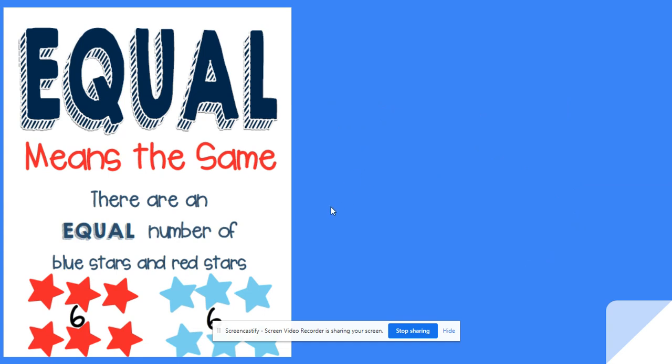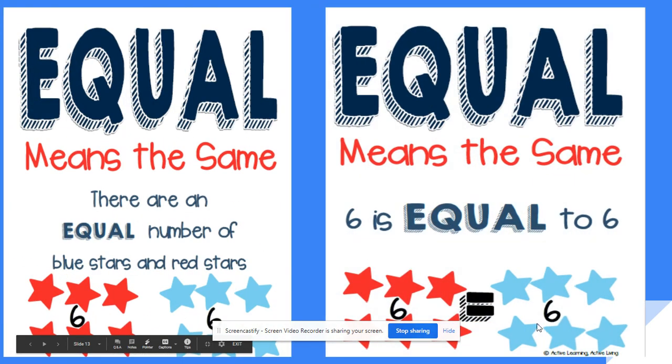The last word is equal. And equal, we've talked about a lot, means the same. So if we look at the stars now, there is an equal number of blue stars and red stars. Equal means the same. And we already know that that equal sign is two lines, just like that. So equal is the same. That means you have the same amount.